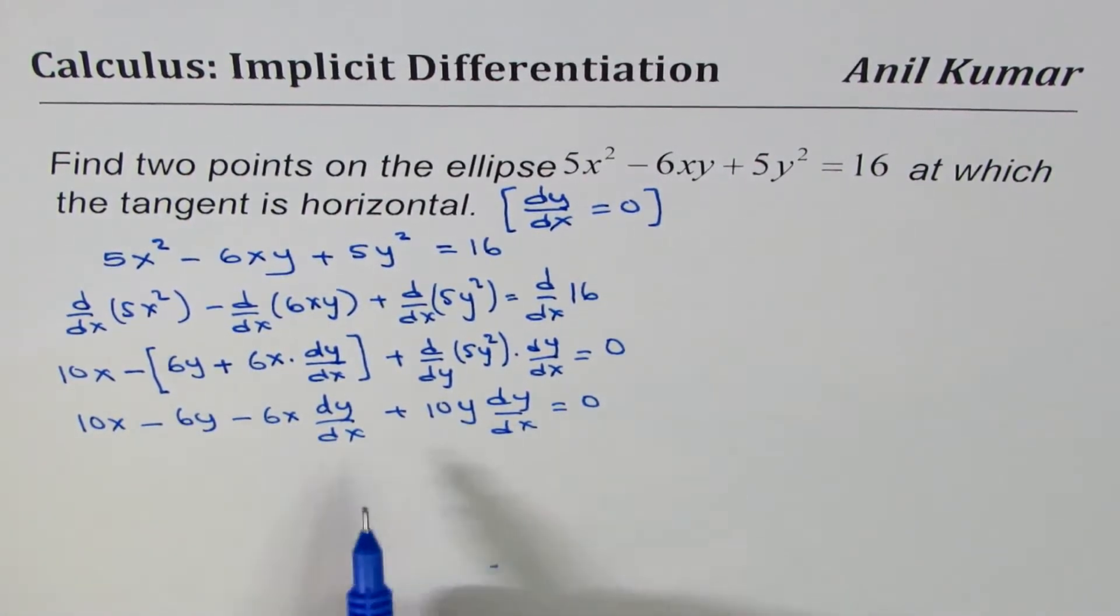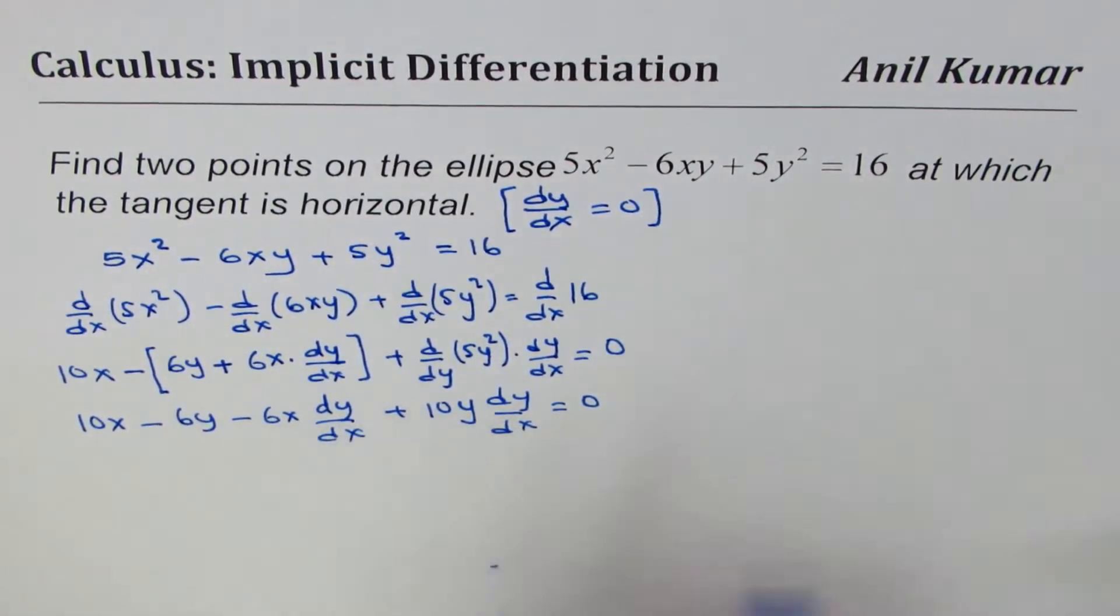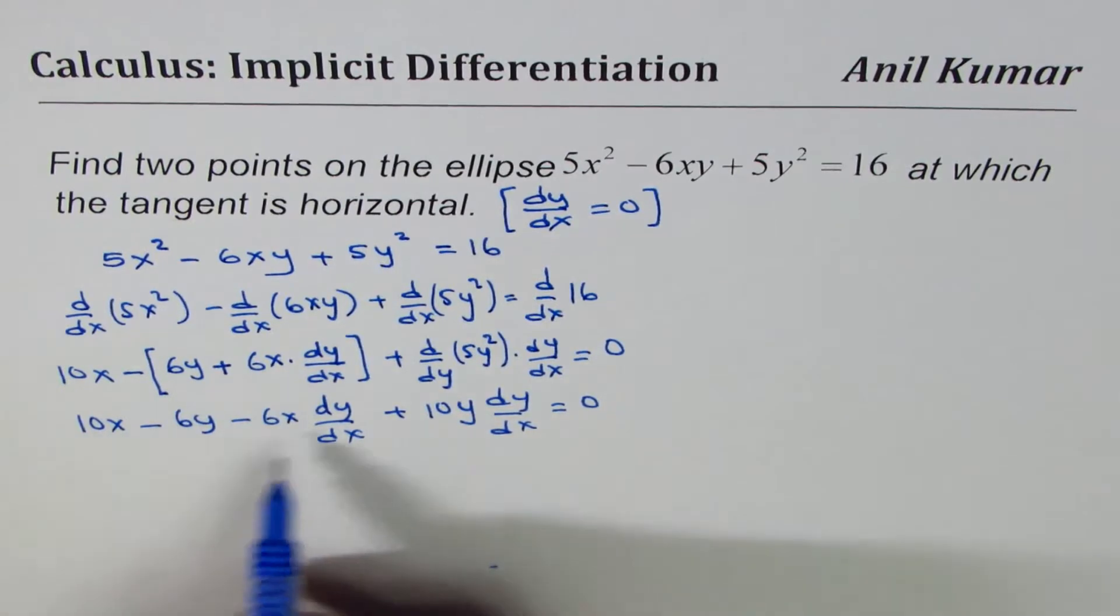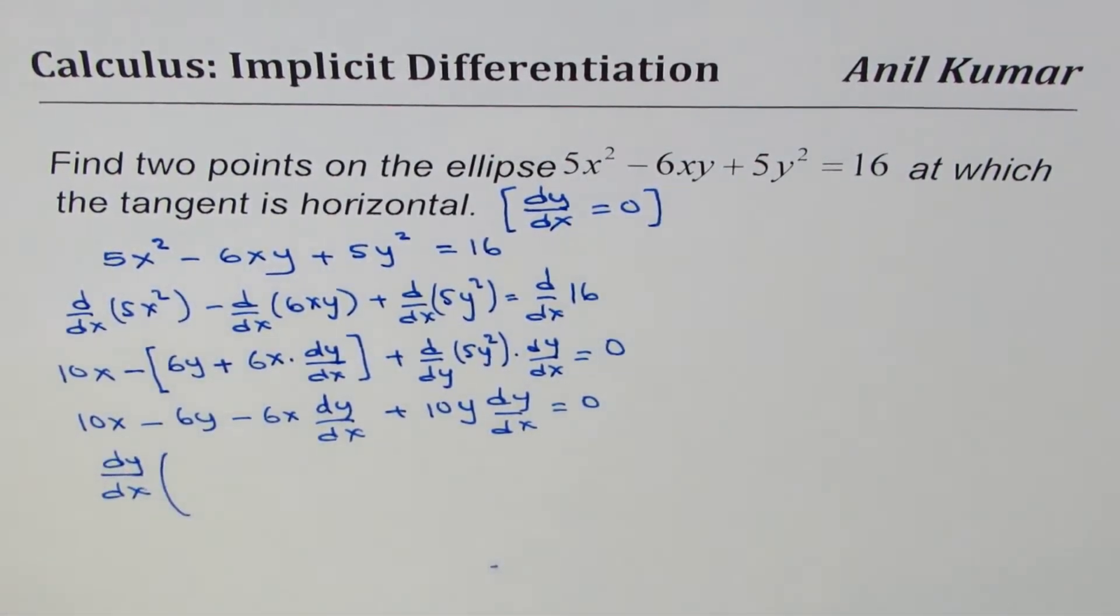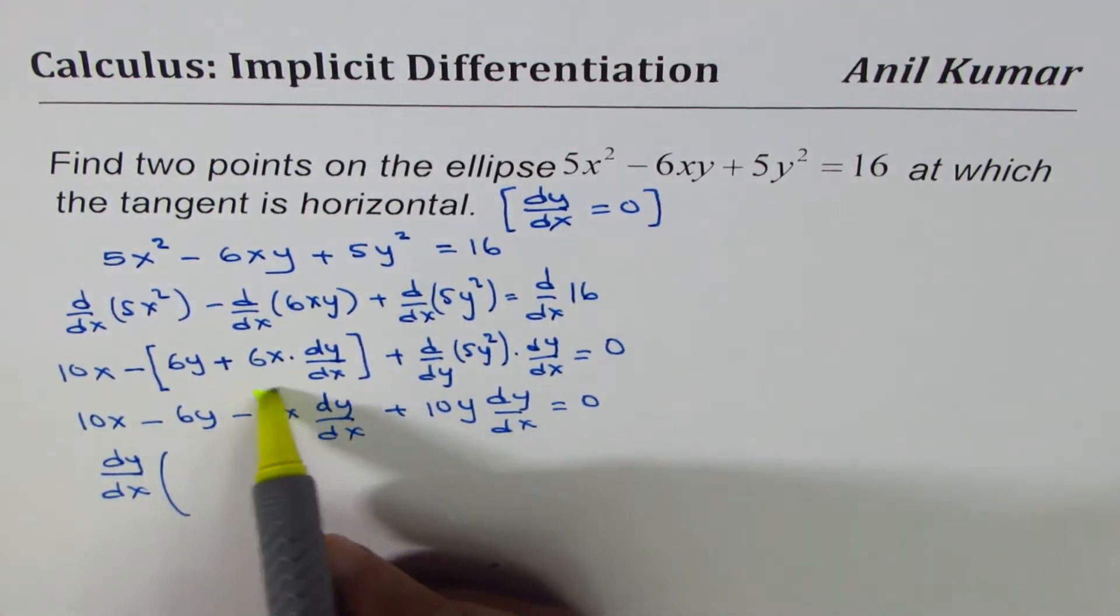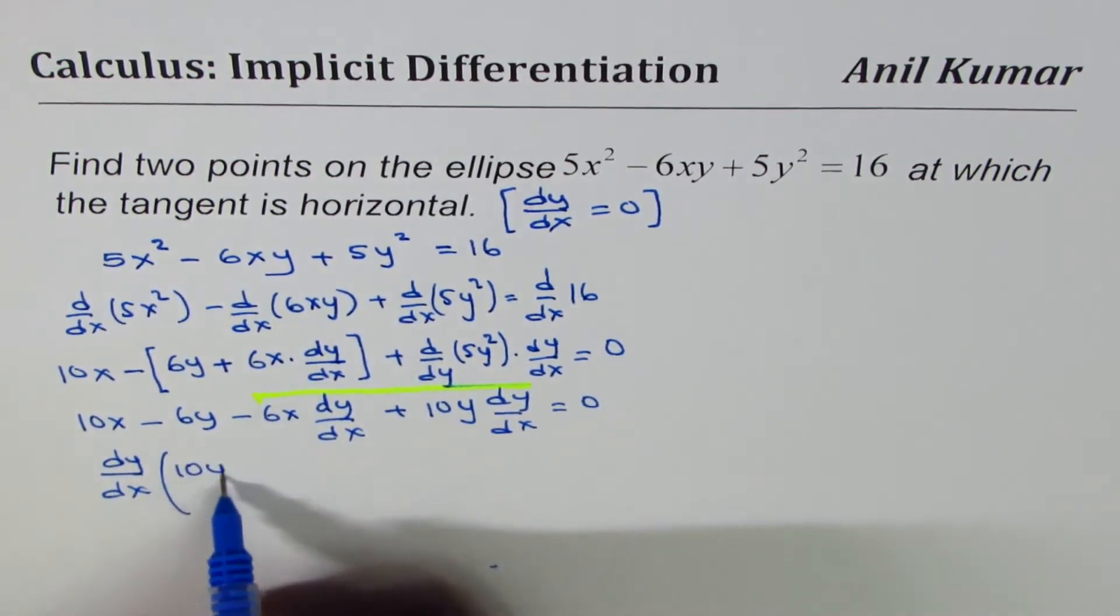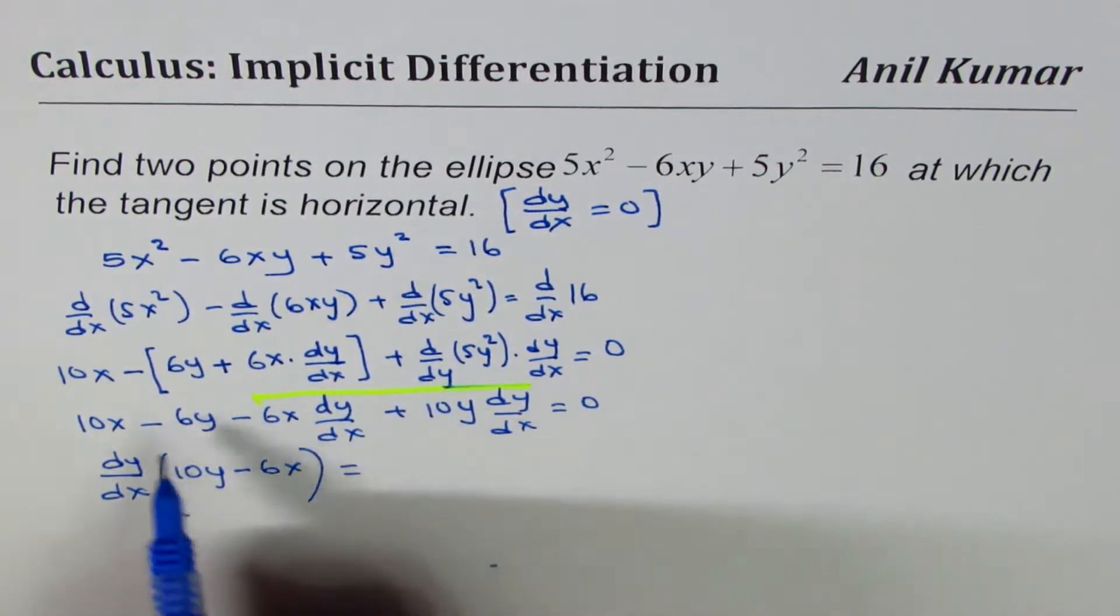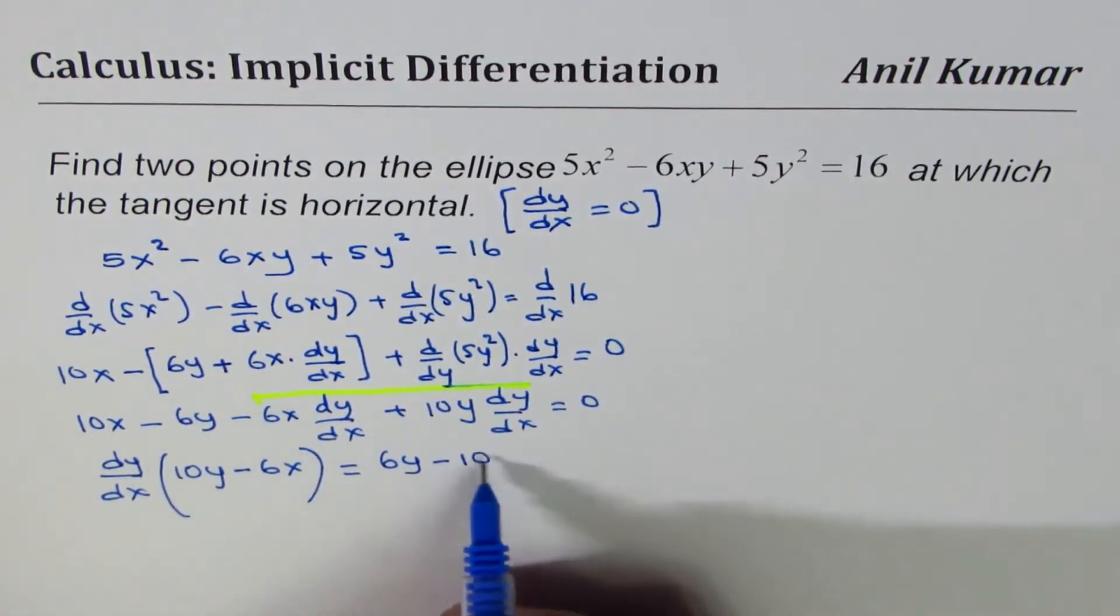Now we can always take dy/dx common and take these terms on the right side. So I am doing two operations at the same time. dy/dx, we will take these terms common, so 10y - 6x. I have considered these two terms equal to - these two terms I am taking to the right side, so I got 6y - 10x.